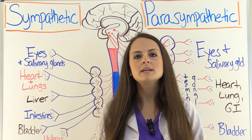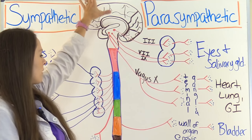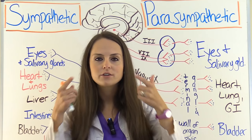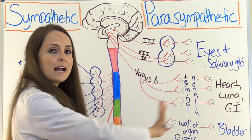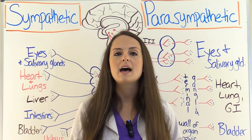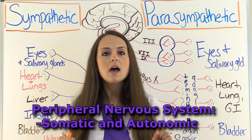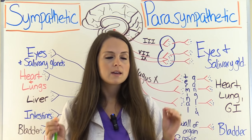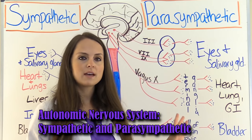The nervous system is made up of two systems. You have the central nervous system, which is the brain and the spinal cord, where information is processed through your eyes, ears, and nose, and sent down through the spine out through neurons through the peripheral system. The peripheral nervous system can be divided into the somatic or the autonomic, and we're talking about the autonomic, which is divided into the sympathetic and the parasympathetic.